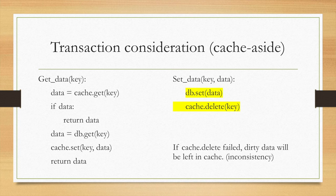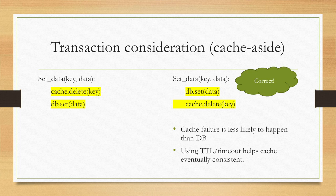So which solution is better? Compare these two solutions. In the industrial environment, we usually use the second solution and set the database first and delete it from the cache. There are two main reasons. One is cache failure is less likely to happen than database failure. So we have less chance to meet the cache failure issue. The other is that if the data is still left in the cache, we can use cache TTL or timeout to help the cache to eventually be consistent.